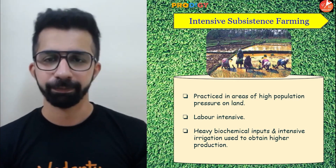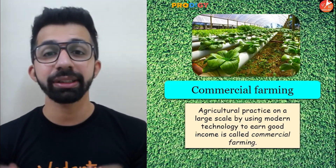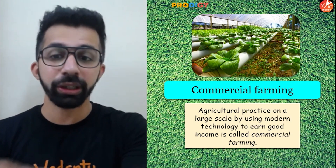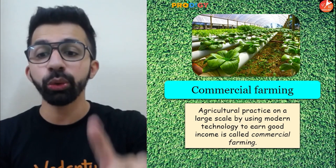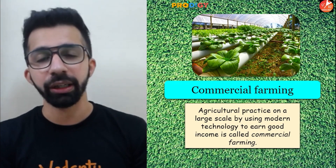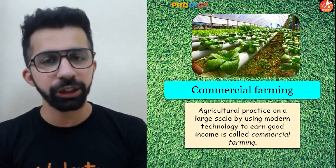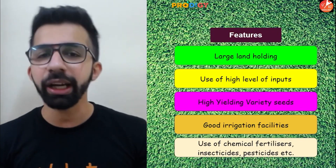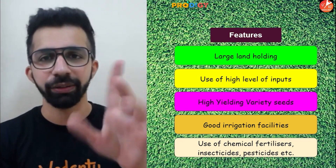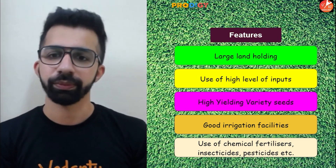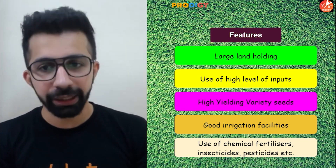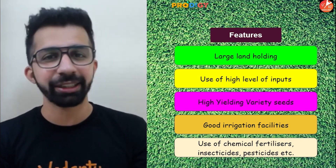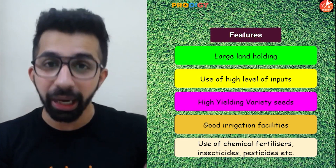The next type is commercial farming. Agricultural practice on a large scale using modern technology to earn good income is called commercial farming. Its key features include large land holdings and the use of high-level inputs such as HYV seeds, good irrigation facilities, chemical fertilizers, insecticides, and pesticides to get maximum production.